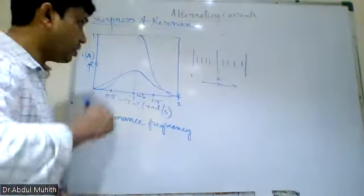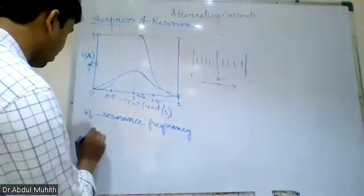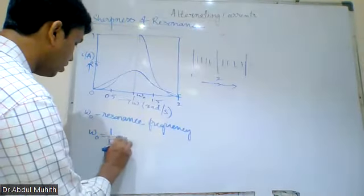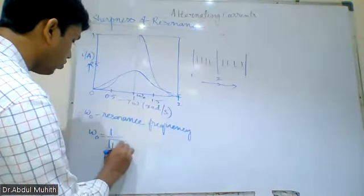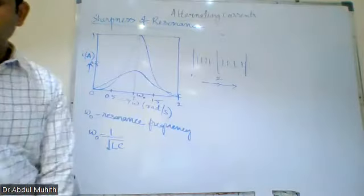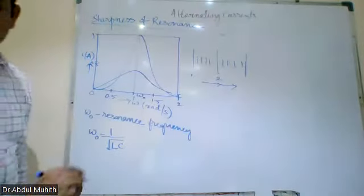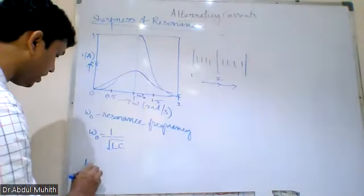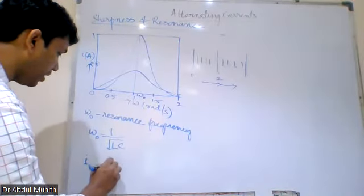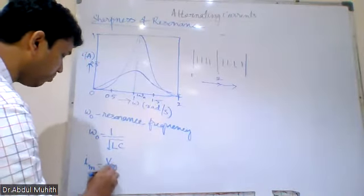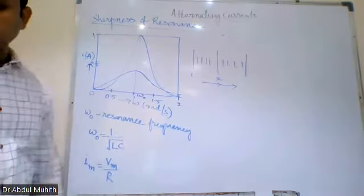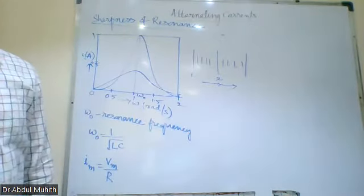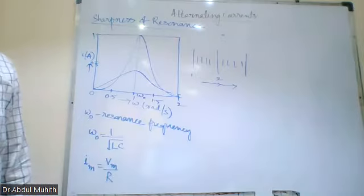The formula for resonance frequency is: omega zero (ω₀) = 1/√(LC). The maximum current I_max is equal to V_m divided by R, or V_m divided by Z.